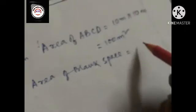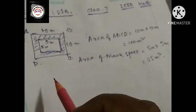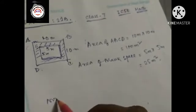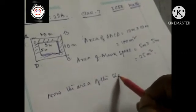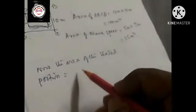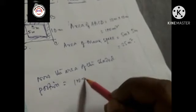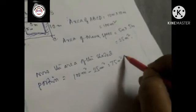The area of the blank space is equal to 5 meter into 5 meter, that is 25 meters square. Therefore the shaded area is 100 minus 25, that means 75 meters square.